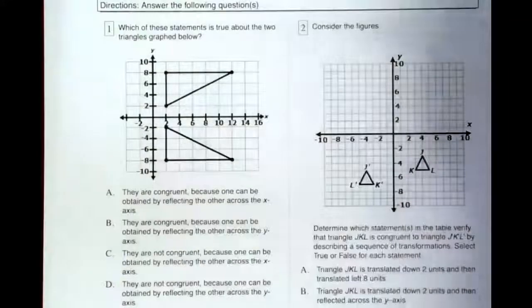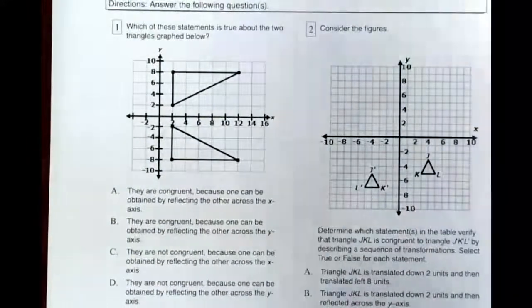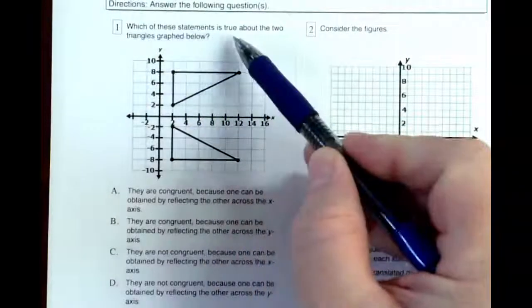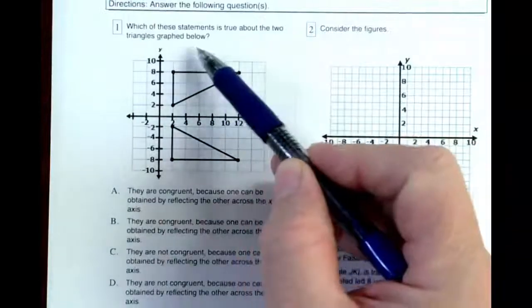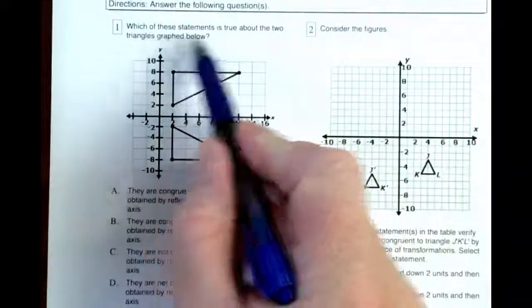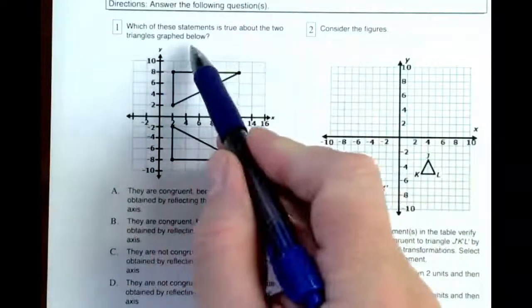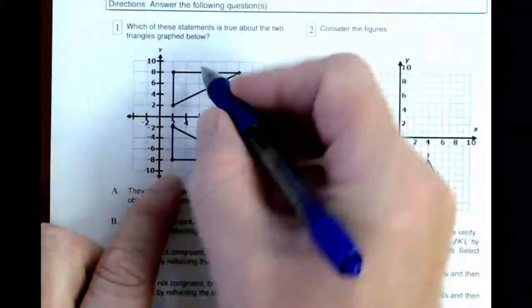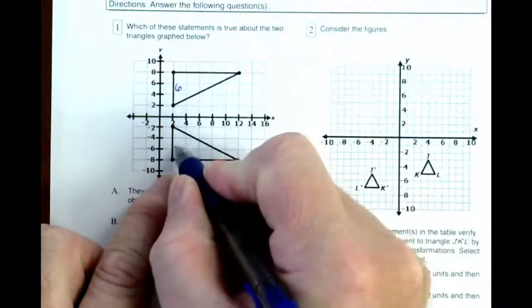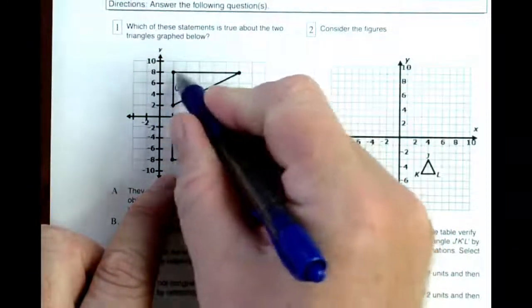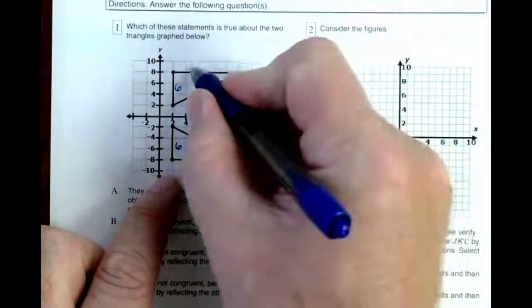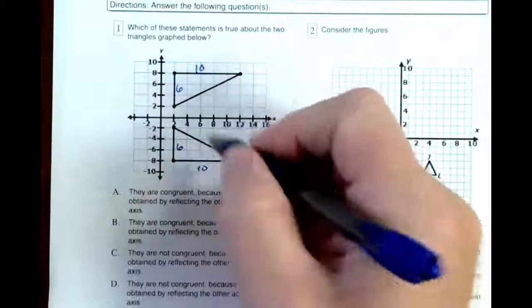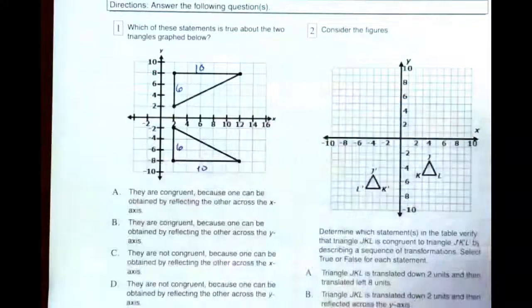Okay, welcome everybody to the Unit 1 review for the CSA. Which of these statements is true about the two triangles graphed below? So we have these triangles. We can see that this is six units and six units. And this is from two to twelve, ten units. And this is from two to twelve, ten units. So we have some identical triangles here.